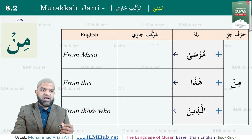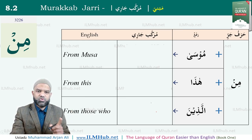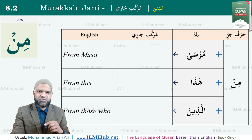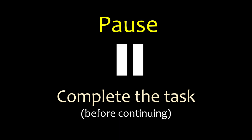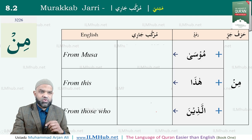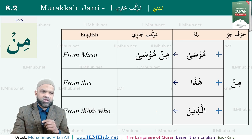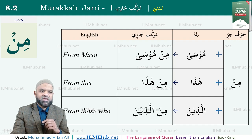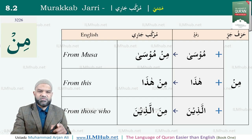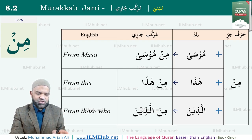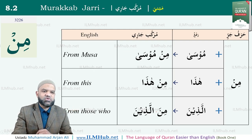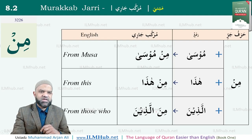The next set includes مُوسَى، هَذَا، الَّذِينَ. Translations: from Musa → مِن مُوسَى; from this → مِن هَذَا; from those who → مِن الَّذِينَ. These words' endings do not change whether they are in rafa, nasab, or jar — their form is fixed. مِن الَّذِينَ is very commonly used in the Quran. These three examples illustrate another important point learned earlier about words with unchanging endings.